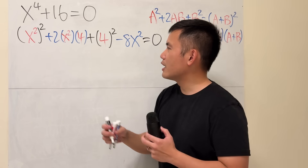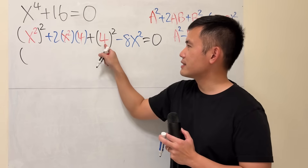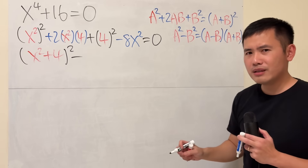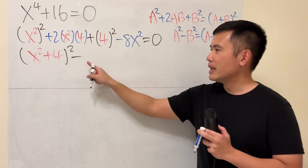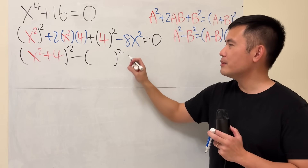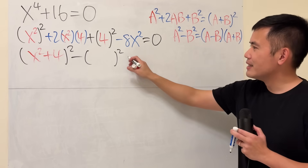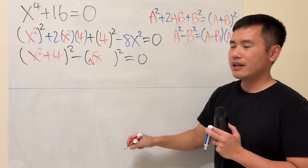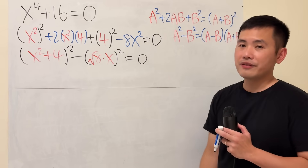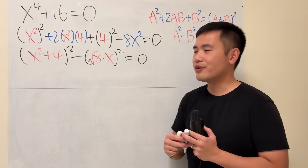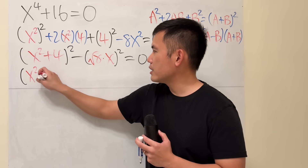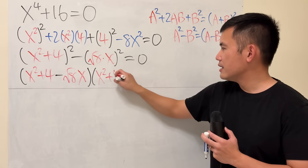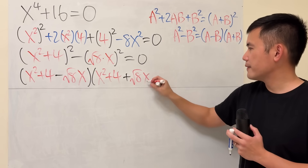For the first three terms, we get x-squared plus 4, all squared. Then for the minus 8x-squared, we write it as minus square root of 8 times x, all squared, so we can apply the difference of two-squares formula. Factoring gives us x-squared plus 4 minus square root of 8 times x, all times x-squared plus 4 plus square root of 8 times x, equal to 0.